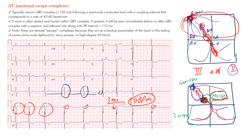To recap an AV junctional escape beat: it's a later impulse with a narrow QRS complex matching the underlying rhythm's morphology. The P wave is absent or buried within the QRS complex, potentially changing the morphology of the terminal QRS complex and ST segment. This is an important topic — understanding why they occur is the key takeaway.